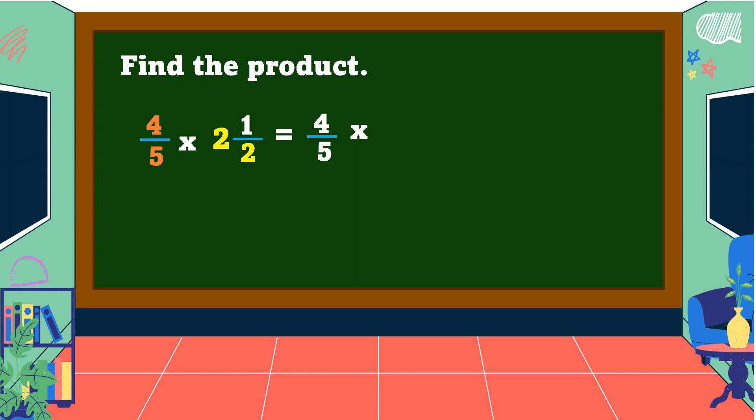So two times two is equal to four, then add the numerator: four plus one is equal to five. Then copy the denominator. So two and one-half is equal to five-halves.